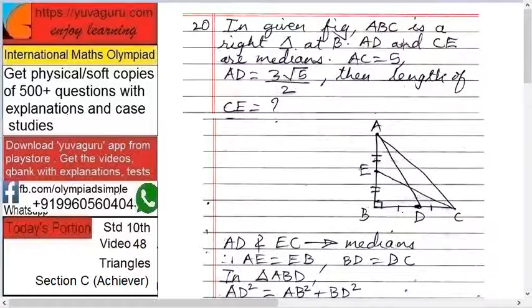Here, firstly, AD and EC are medians. So AE equals EB and BD equals DC. That much is correct.